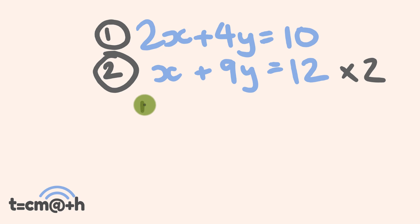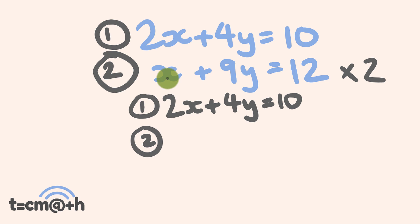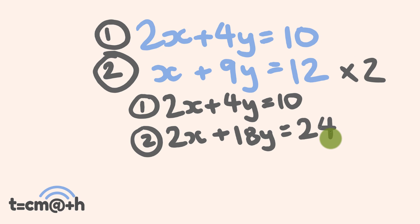I'm going to rewrite equation 1 here: 2x plus 4y is equal to 10. Now what we're going to do is multiply equation 2 by 2. So 2 times x is equal to 2x, this is going to be added to 9 times 2 which is 18 — that's in front of the variable y — and then we have 12 times 2 which is 24. Just doubling that entire equation.